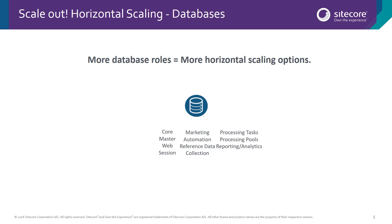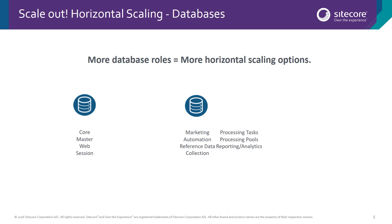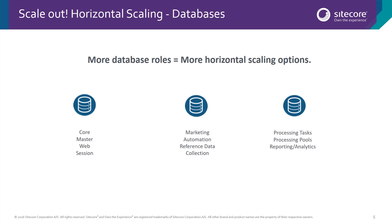Let's get into horizontal scaling. All the classic Sitecore databases — Core, Master, Web — support the ability to deliver them on a dedicated server. Experimental support is also available for transactional replication of the web database, but in general these databases cannot be replicated. It's generally recommended to scale out processing, reporting, and analytics databases onto their own dedicated server. The Collection Database can be served by a dedicated server, but also supports horizontally scaling using sharding.